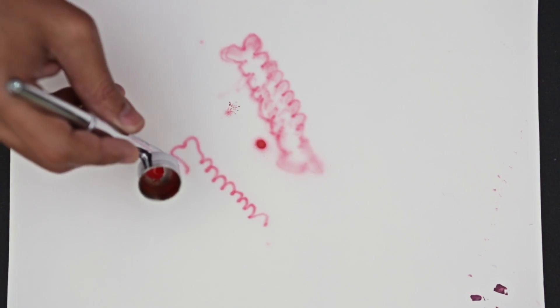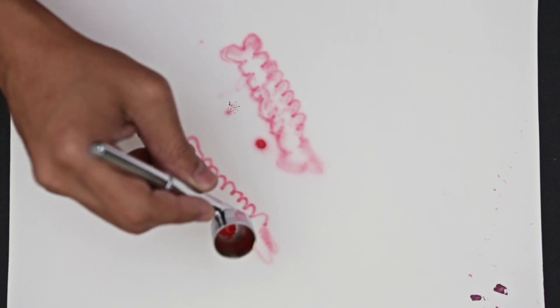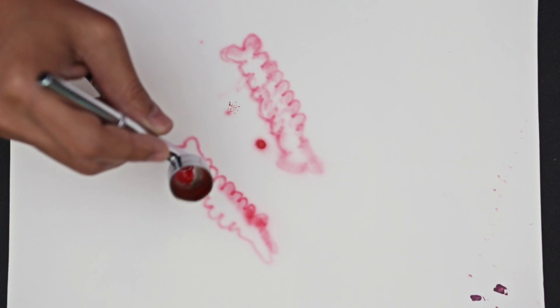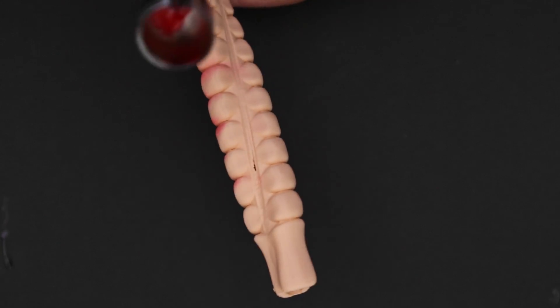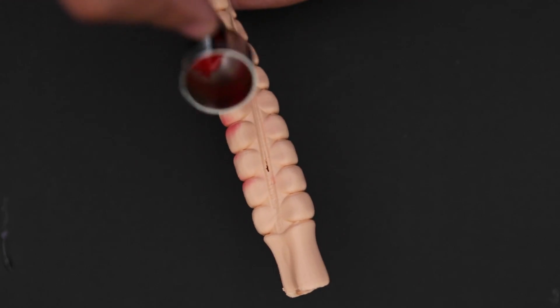This was our first time airbrushing, so we made sure to practice on some paper and failed prints to get a feel for it. We're really just adding shades of pigment to the creases and adding details like thin veins. With a couple of light coats, you can really add some depth to the part and give it that finished look.